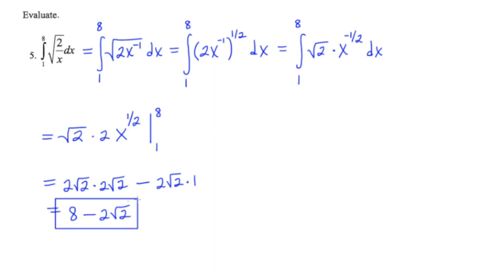Once we took the antiderivative, the problem wasn't so difficult. But the transition getting from the first step to the second step to the third step, those are the tricky things. There was a lot of weird algebra that was required to get us to that point, but once we got there, it wasn't so bad. Some of these aren't too difficult, but you do have to have your algebra skills in check. So this is our third example of evaluating a definite integral using the fundamental theorem of calculus. Let's move on to the third slide.